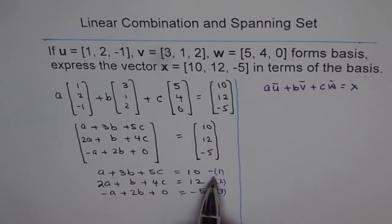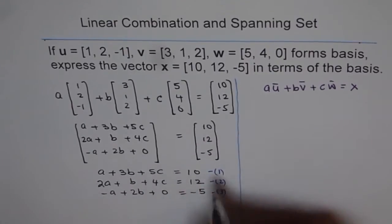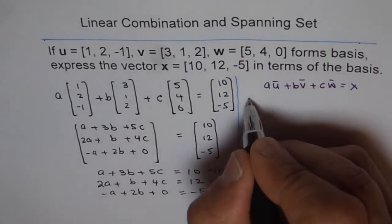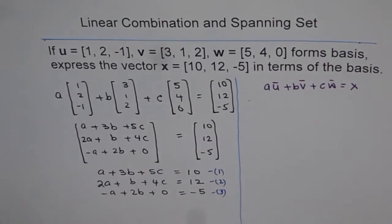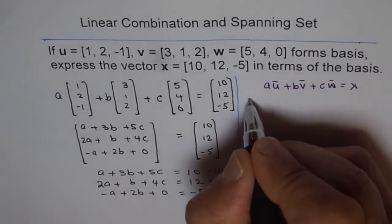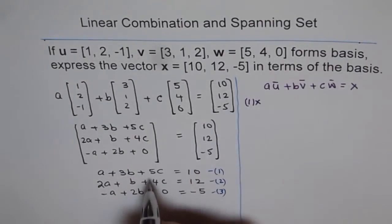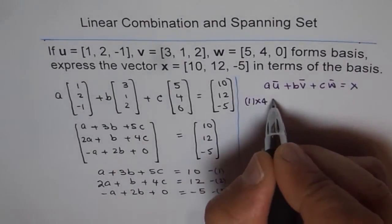So what we will do is, we will multiply equation 1 by 4, and equation 2 by 5. So what I am trying to do here is, that I am going to multiply equation 1 by 4, I want to eliminate C.